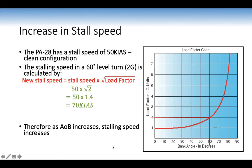The PA28 has a stall speed of 50 knots in clean configuration — the speed below which level flight is not possible. In a 60-degree level turn at 2G, the new stall speed equals the stall speed times the square root of the load factor: 50 × √2 = 50 × 1.4 = 70 knots. Therefore, as angle of bank increases, stall speed increases. There's an exponential relationship — at 40° you feel 1.4G, at 60° you feel 2G, at 80° over 5G. The threat is loss of control from excessive angle of bank leading to a stall.